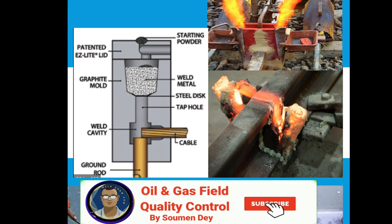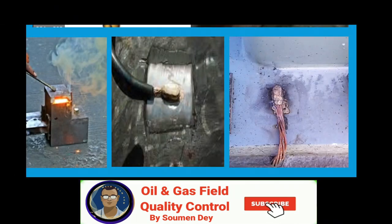What is cad weld, or thermite welding? It is a welding process that utilizes an exothermic thermite reaction between metals like aluminum and copper oxide, which helps transfer uncontaminated copper into the weld. Cad weld connections are the accepted method of attaching cathodic protection leads to pipe steel, cast iron tanks, and structures, welding the conductors to the structure so that no galvanic corrosion can occur at the interface.